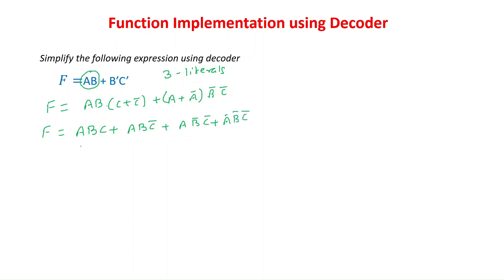ABC is min term 7 because A, B, C are 1,1,1 and the decimal representation of 111 is 7. So this function is nothing but the sum of min terms 0, 4, 6, and 7.